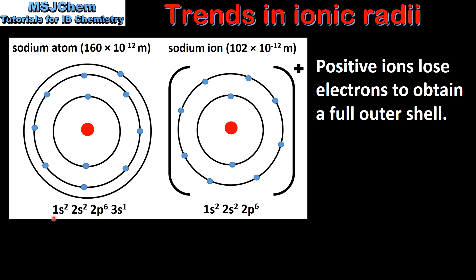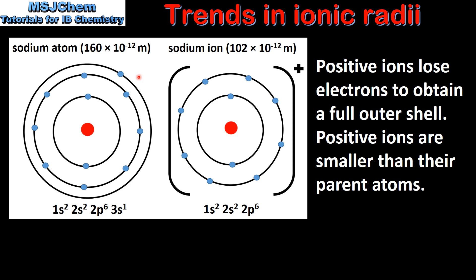The electron configuration of the sodium atom is 1s2, 2s2, 2p6, 3s1. The sodium atom loses its 1 valence electron to form a 1+ ion with the electron configuration 1s2, 2s2, 2p6. If we compare the size of the sodium atom and the sodium ion we can see that the sodium ion is smaller than the sodium atom.